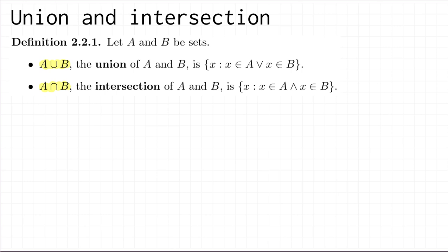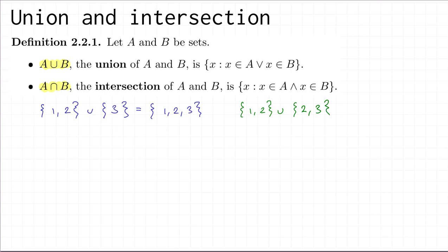Let's give some examples of union and intersection, starting with union. If I have the set {1, 2} and take the union with the set containing 3, the resulting set has all things which are in the first set or the second set, so it consists of 1, 2, and 3. On the other hand, if we take {1, 2} and union that with {2, 3}, this is again the set of all things which are in the first set or the second set, so we again get {1, 2, 3}.